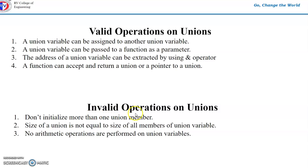Invalid operations on unions are: do not initialize more than one union member — if you do, you will get a warning and all members will not have proper values. The size of a union is not equal to the sum of all its members, as it is in a structure. No arithmetic or logical operations can be performed on union variables.